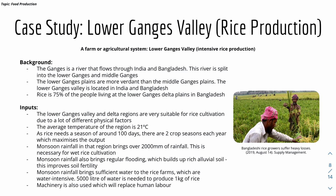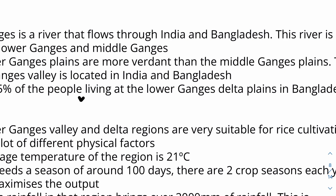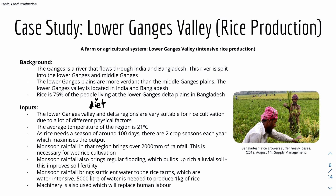Our first case study is the Lower Ganges Valley, which has intensive rice production. The Ganges is a river flowing through India and Bangladesh, split into Lower and Middle Ganges. The Lower Ganges Plains are more verdant than the Middle Ganges Plains. Rice makes up 75% of the diet of people living in the Lower Ganges Delta Plains in Bangladesh.